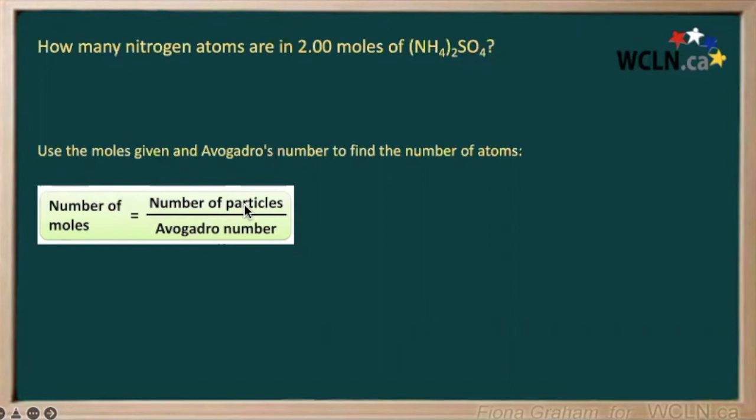Which is what the question is asking us to find. Our number of particles or atoms, we would simply multiply our number of moles by Avogadro's number. So let's start by doing that. We have two moles.